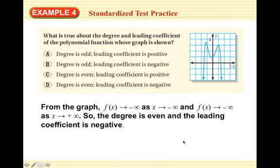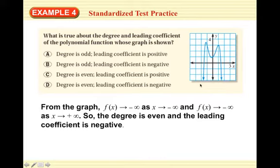Remember: f(x) goes to negative infinity as x goes to negative infinity, and f(x) goes to negative infinity as x goes to positive infinity — so degree is even and leading coefficient is negative. If the two ends go in the same direction, the degree has to be even; if they go in opposite directions, the degree is odd. Then you look at whether both ends go down (frown, negative coefficient) or both go up (smile, positive coefficient).